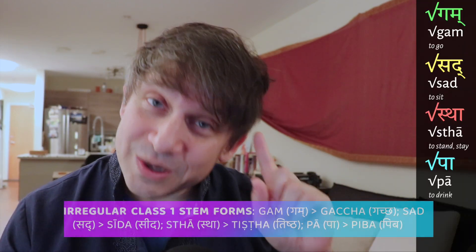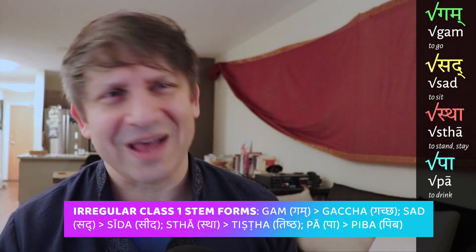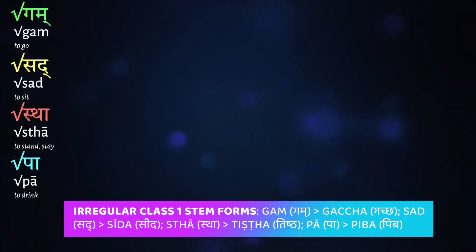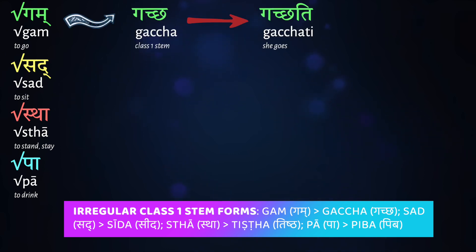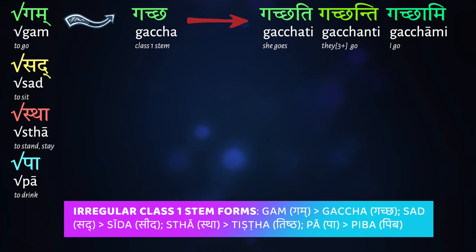There are lots and lots of class 1 verbs like this. After you see how these stems form a few times, you'll have no trouble recognizing them — it's really fairly straightforward. There are a few irregular ones, though, and we should take care to remember them right off the bat. One of them is the root gam, which means 'to go,' and which has the irregular stem gaccha. We already know it: sā gacchati, 'she goes'; te gacchanti, 'they go'; ahaṃ gacchāmi, 'I go.'